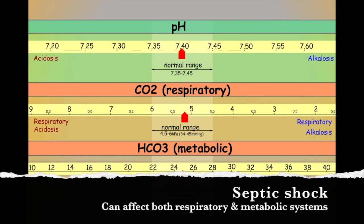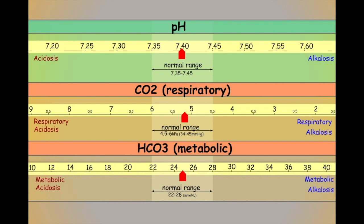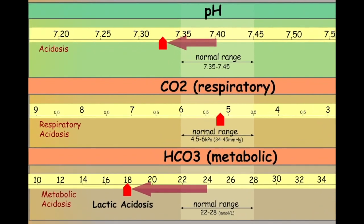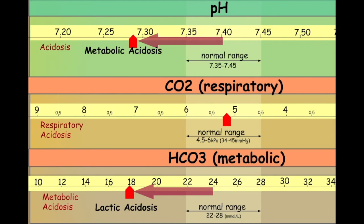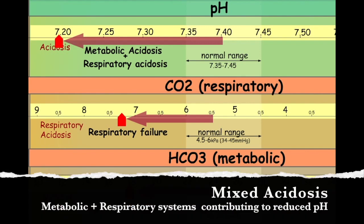For example, a patient suffering from severe acute sepsis will eventually start to suffer from multi-organ failure. As tissues become hypoxic, anaerobic respiration will occur and lactic acid will be produced. This will push the metabolic element in an acidotic direction. The lungs will eventually also become damaged and their ability to clear carbon dioxide will be reduced. CO2 will begin to accumulate in the blood, pushing the body into a respiratory acidosis. We would call this a mixed acidosis, as both respiratory and metabolic components are pushing in an acidotic direction.